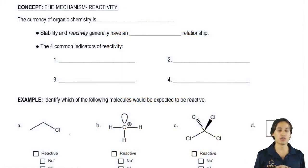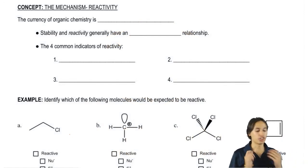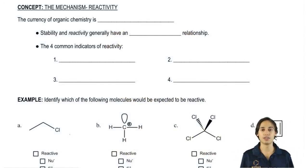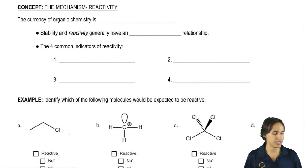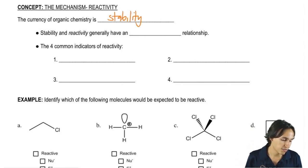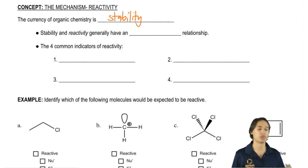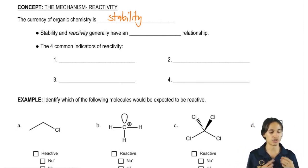So let's go ahead and begin. So just so you guys know, the currency of organic chemistry – and I've said this before – is stability. Every atom wants to become more stable. Every molecule wants to become more stable.